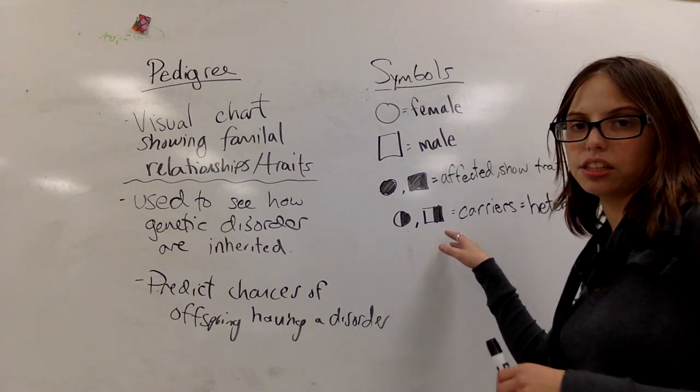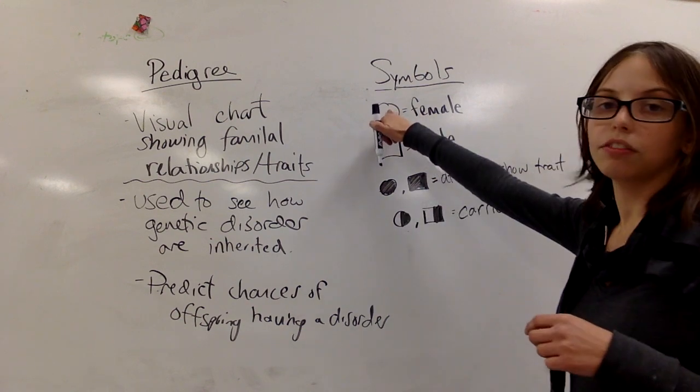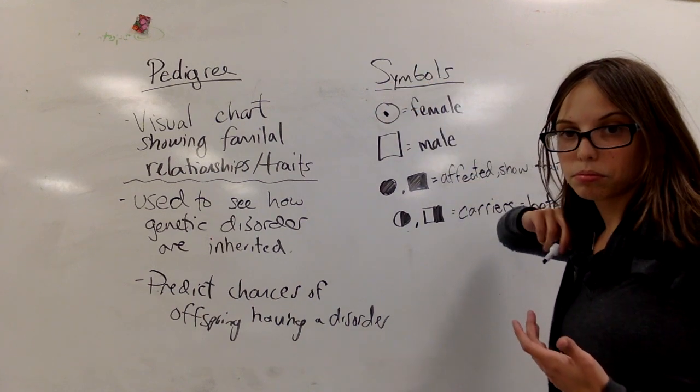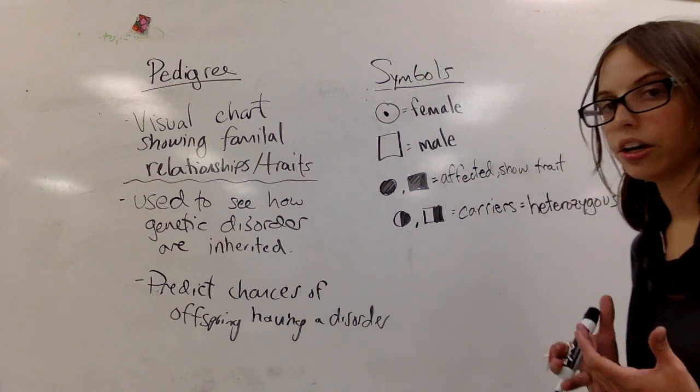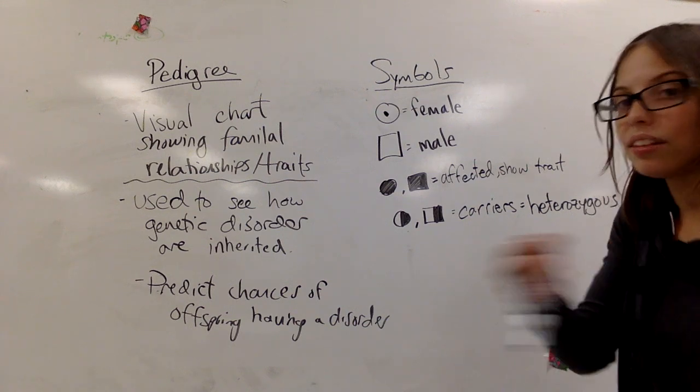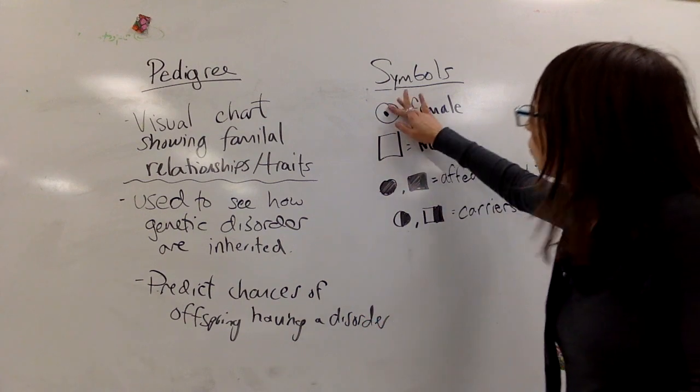The only other variation I've seen on these are a circle and a square that are like mostly not filled in, but they have a little dot in the middle of them. I've seen that indicated as carriers on some keys. It's the same idea where you have the carrier, you have the recessive allele, but you don't show it.